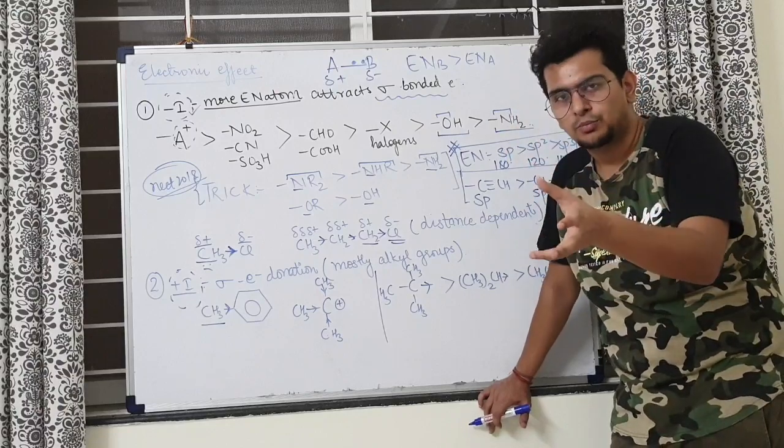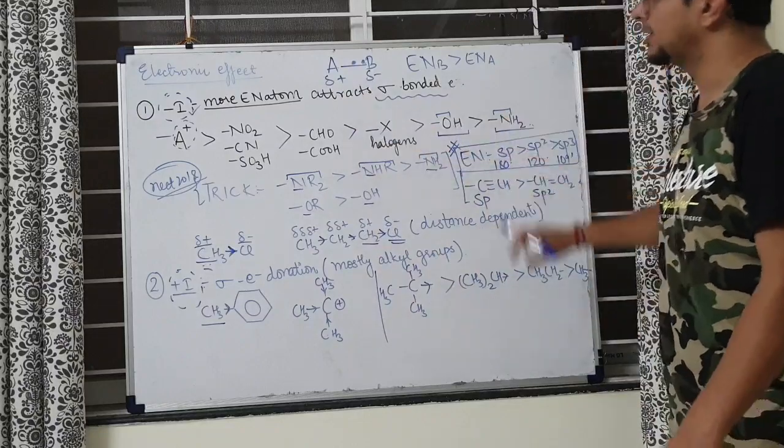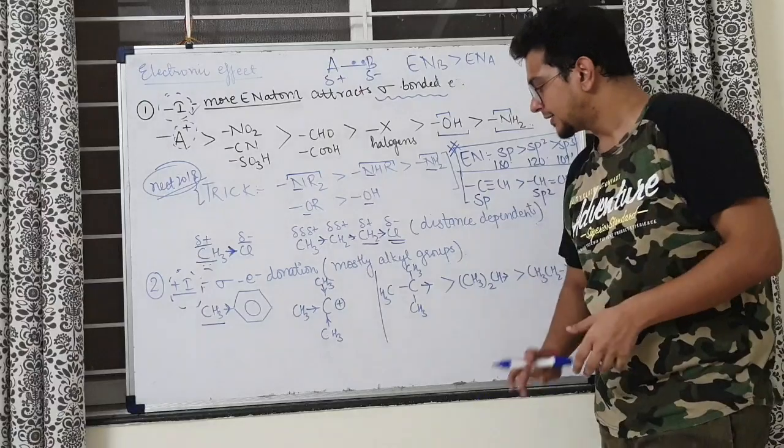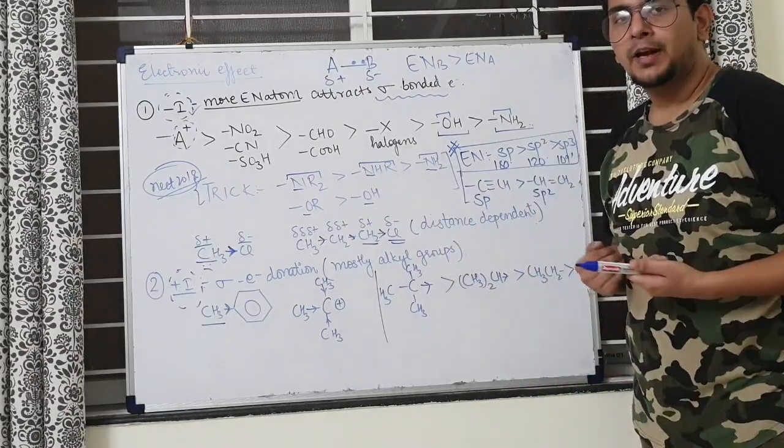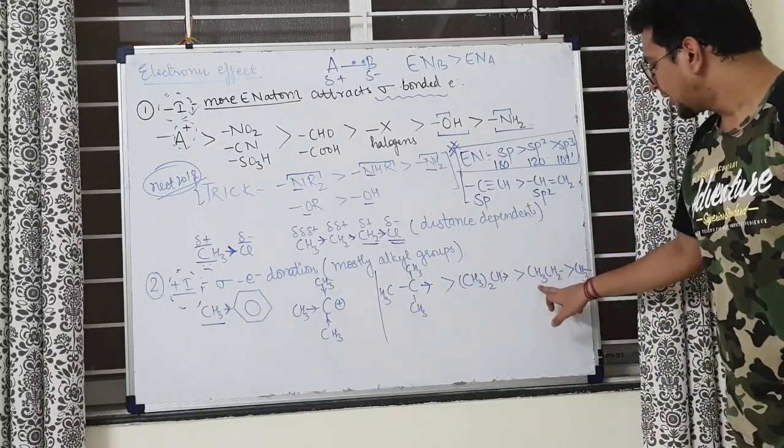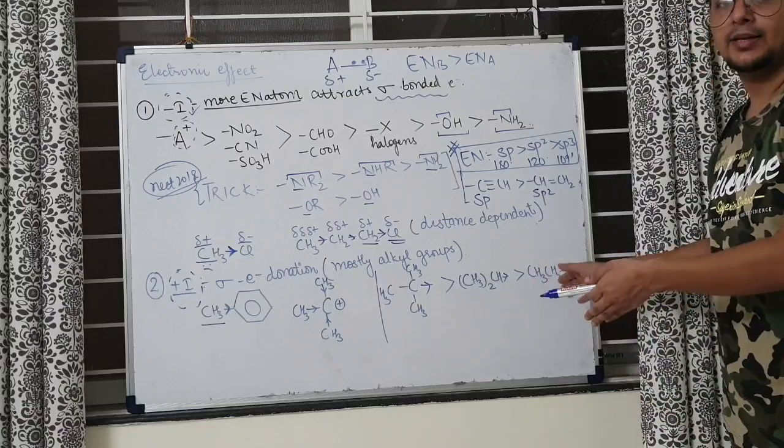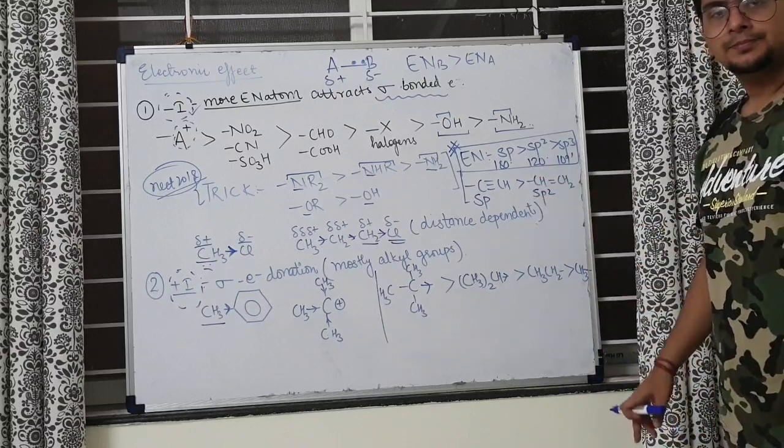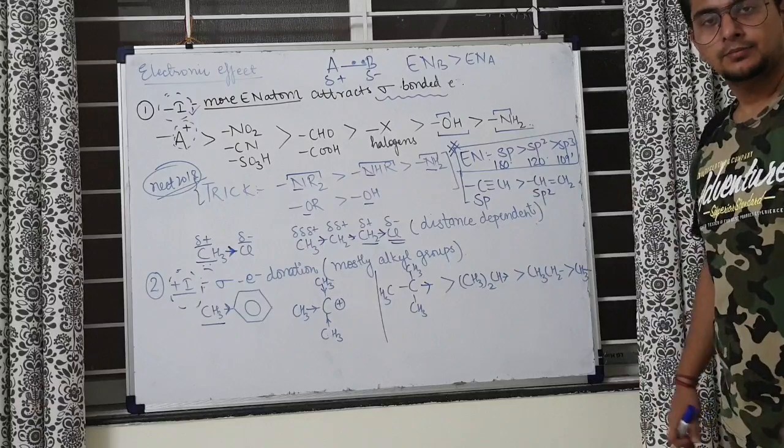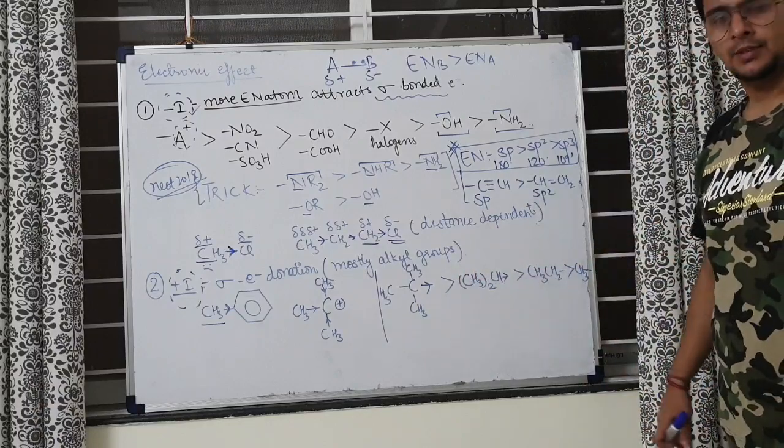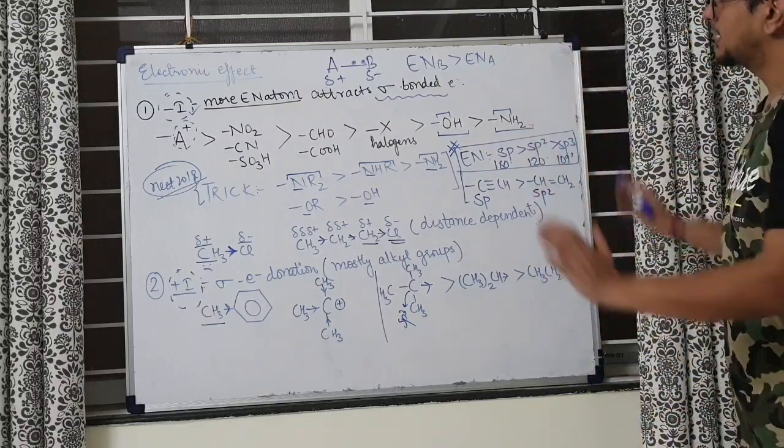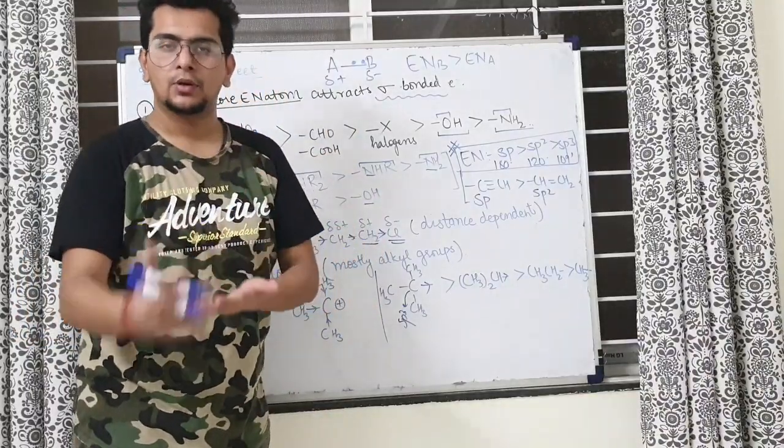Alkyl groups have electron donating effect. More alkyl groups mean more electron donating - three alkyl groups with CH donate more than two alkyl groups with CH2, which donate more than one methyl group. Triple bonded carbon is SP, double bonded is SP2 - SP is more electronegative than SP2, so they're -I groups. Single bonded carbon (SP3) are +I groups. So SP3 hybridized carbons are +I, while SP2 and SP are -I groups. This is about inductive effect. Now I'm going to start with hyperconjugation.